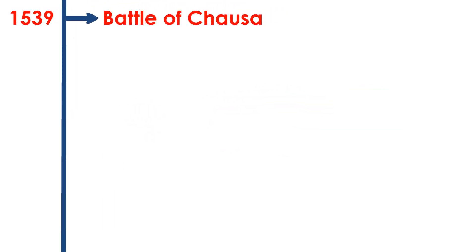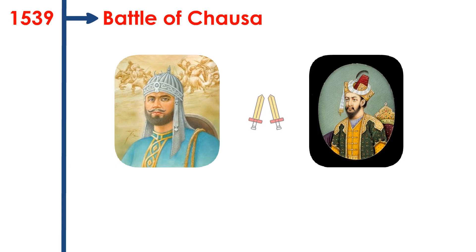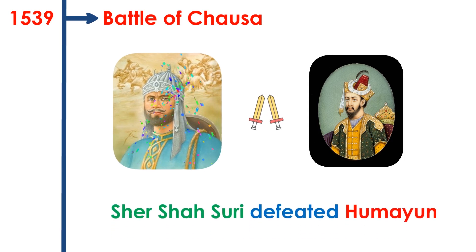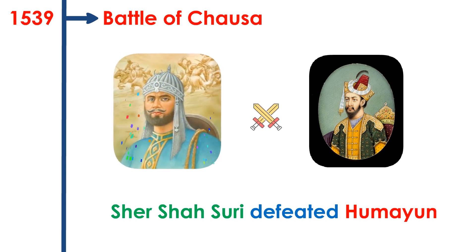First Battle of Chausa. The battle was fought between Mughal Emperor Humayun and Sher Shah Suri, in which Sher Shah Suri defeated Humayun.